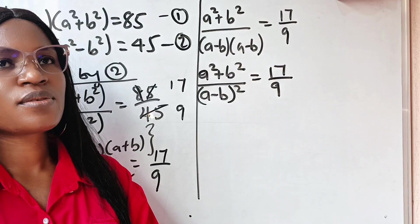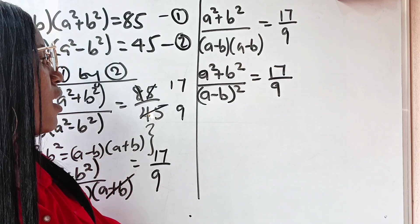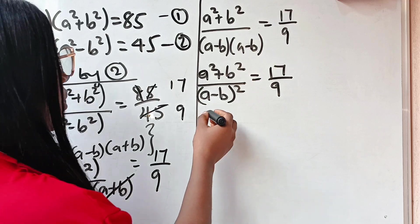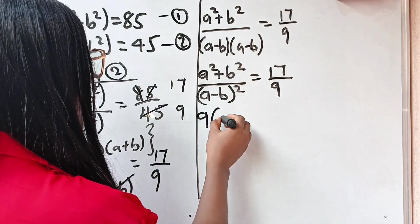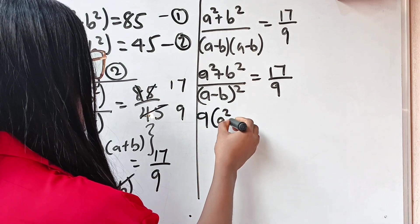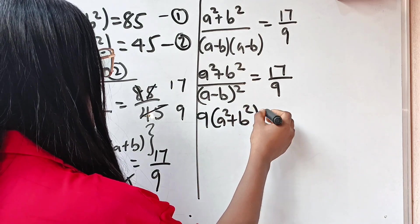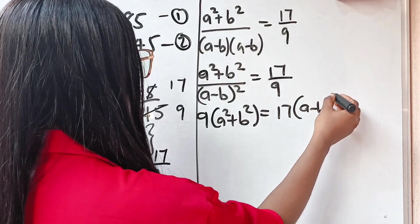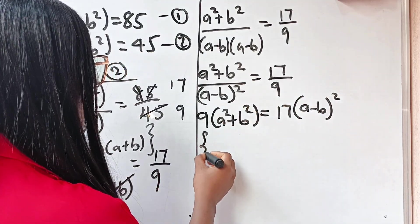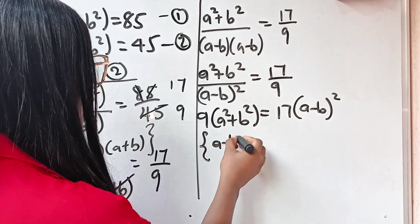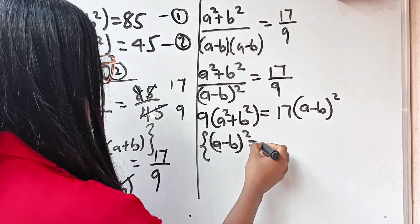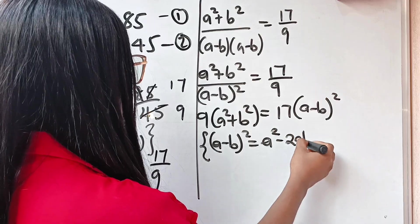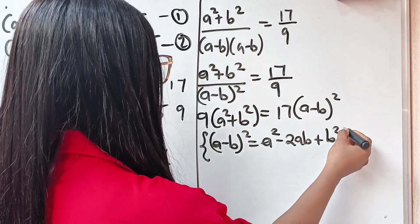Now if we cross multiply, we are going to have nine brackets a squared plus b squared is equal to 17 brackets a minus b squared. Remember that a minus b squared is equal to a squared minus 2ab plus b squared.